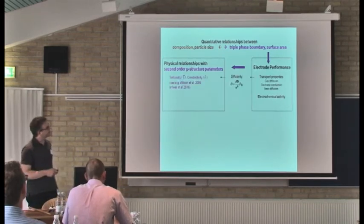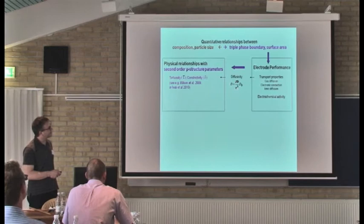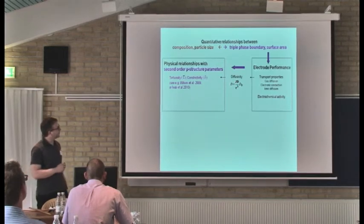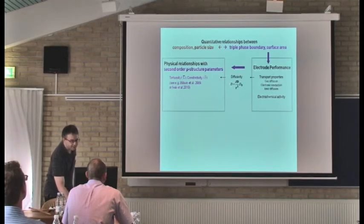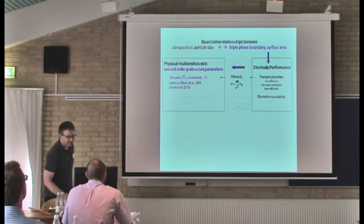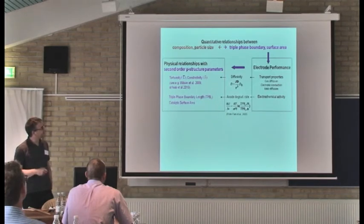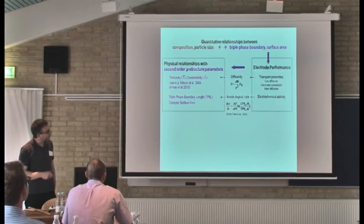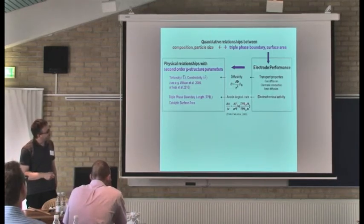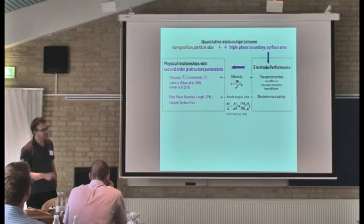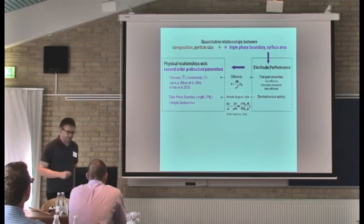For example, diffusivity is described in terms of tortuosity and constrictivity, related to transport with gas diffusion. And of course, triple phase boundary is another important parameter. For example, a recent paper describes the degradation rate over a certain time as a function of the ratio between the TPBs — actually the change of TPBs over the same time.